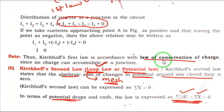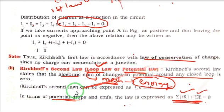Regarding loop law: loop law and mesh law are the same. This is about conservation of energy. Loop law is related to the law of conservation of energy. The algebraic sum of potential around any closed loop is zero. And Kirchhoff's second law is also called KVL — Kirchhoff's Voltage Law.